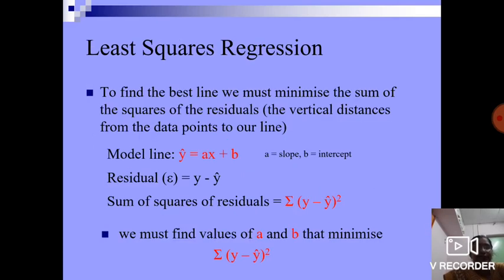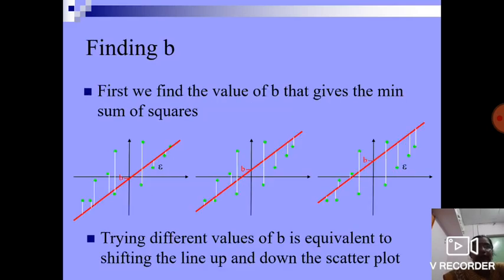Least squares regression. To find the best line, we must minimize the sum of squares of the residuals, the vertical distances from the data points to our line. Model line, which is ŷ equals Ax plus B. A is the slope, B is intercept. Residual ε equals y minus ŷ. Sum of squares of residuals equals sum of (y minus ŷ) squared. We must find the values of A and B that minimize summation (y minus ŷ) squared.